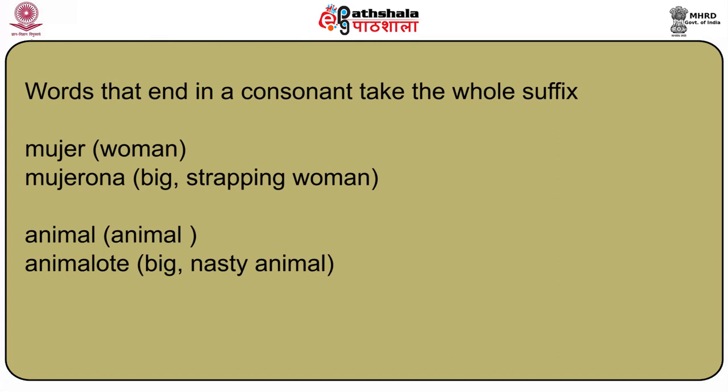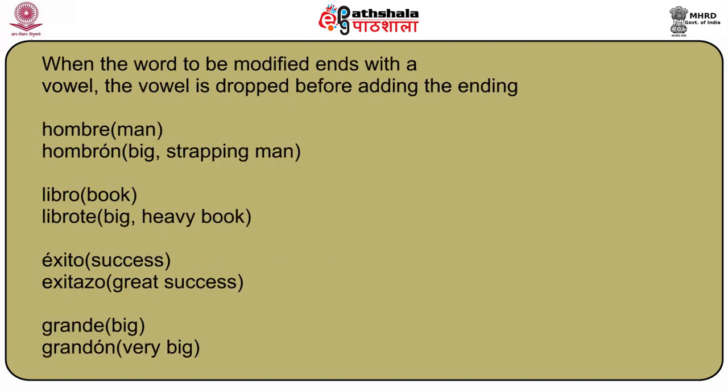Words that end in a consonant take the whole suffix. So mujer (woman) becomes mujerona (a big strapping woman); animal becomes animalote (big nasty animal). When the word to be modified ends with a vowel, the vowel is dropped before adding the ending. So hombre (man) becomes hombrón (big strapping man); libro (book) becomes librote (big heavy book).